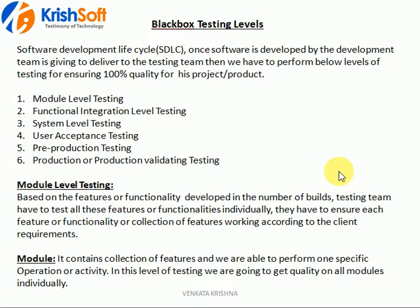In white box testing there are two levels: unit testing and technical integration testing. Coming to black box testing levels, there are six levels of testing we perform before sending an application to the live or production environment. These six levels are: module level testing, functional integration level testing, system level testing, user acceptance testing, pre-production testing, and production testing. Every application must go through all six levels before going live to end users.